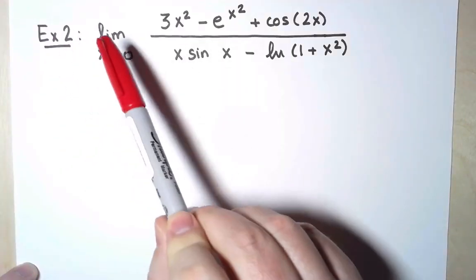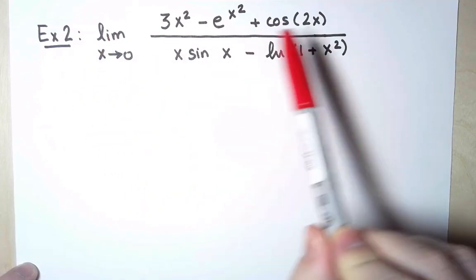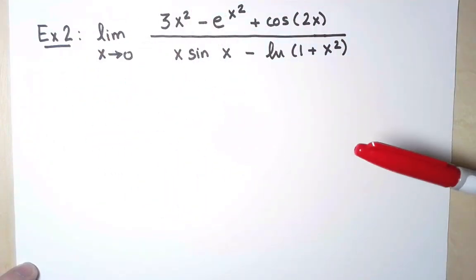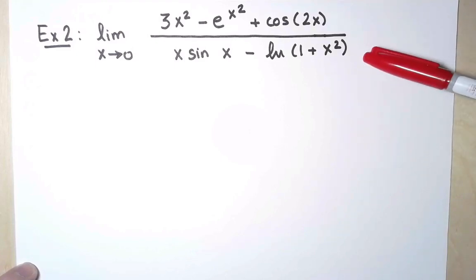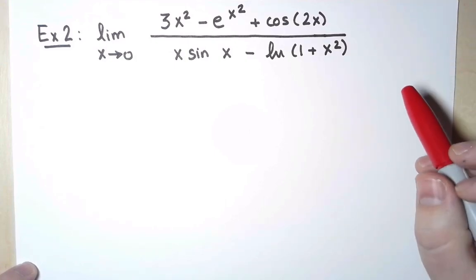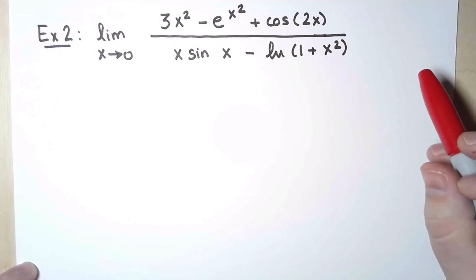This is my second example. I want to compute the limit as x approaches 0 of this complicated expression. This is an indeterminate form of type 0 over 0. So you can try to use L'Hôpital's rule for it. But the computations get pretty messy after a while, and probably you will give up in the process. I think it is easier to solve this using power series. So I'm going to do that.